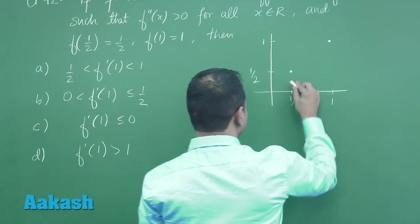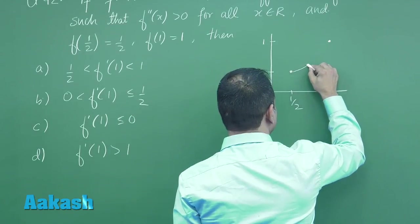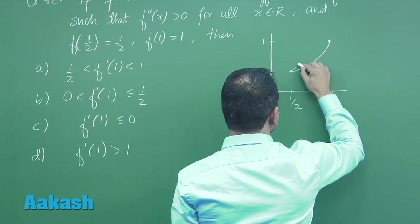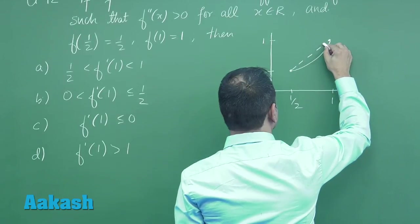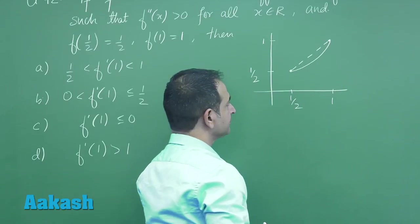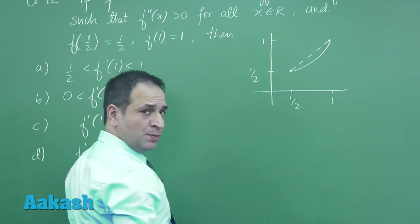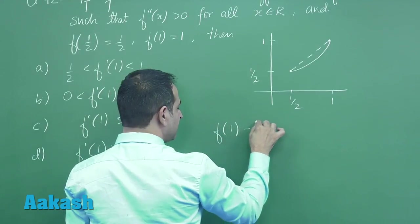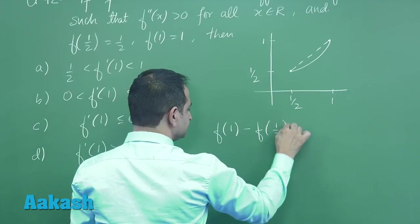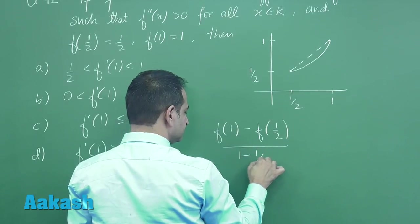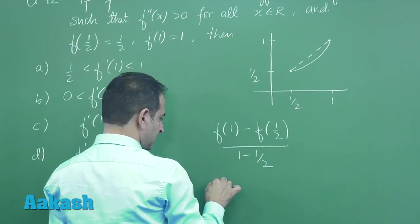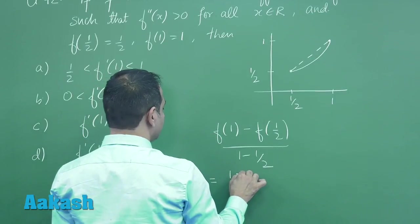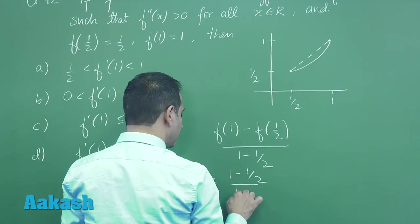So definitely this is going to take this shape, and you can notice here that the slope of this chord joining the two points is given by f(1) - f(1/2) over 1 - 1/2, which equals (1 - 1/2)/(1/2), which is exactly equal to 1.